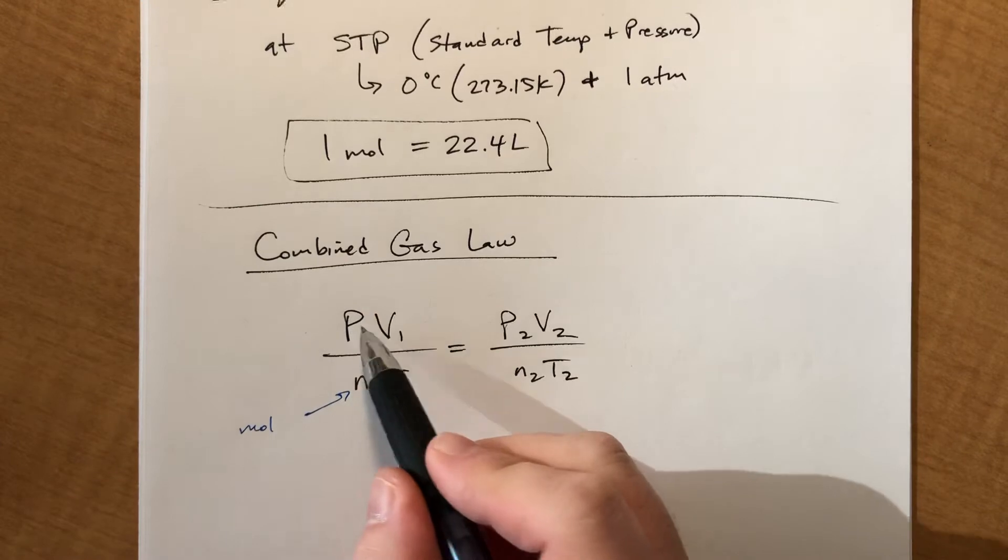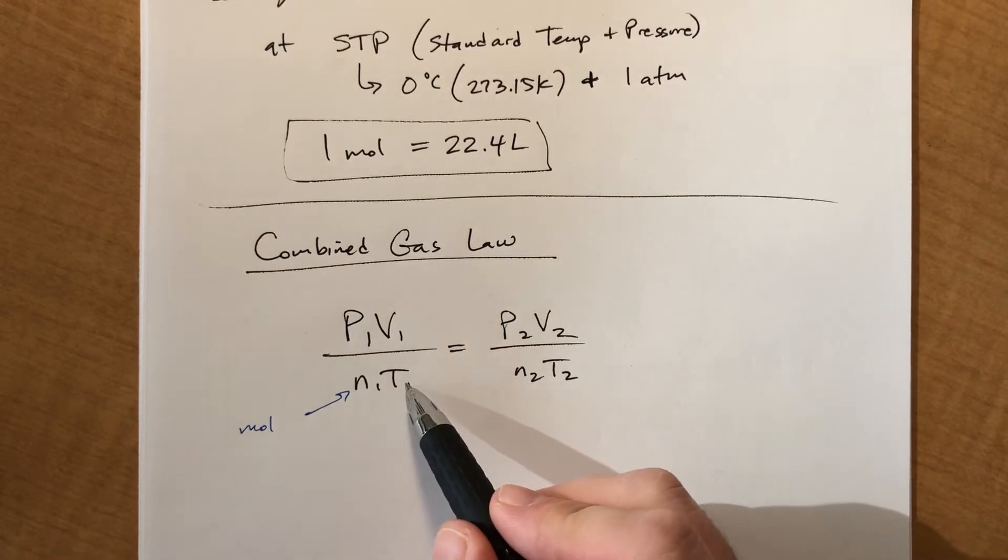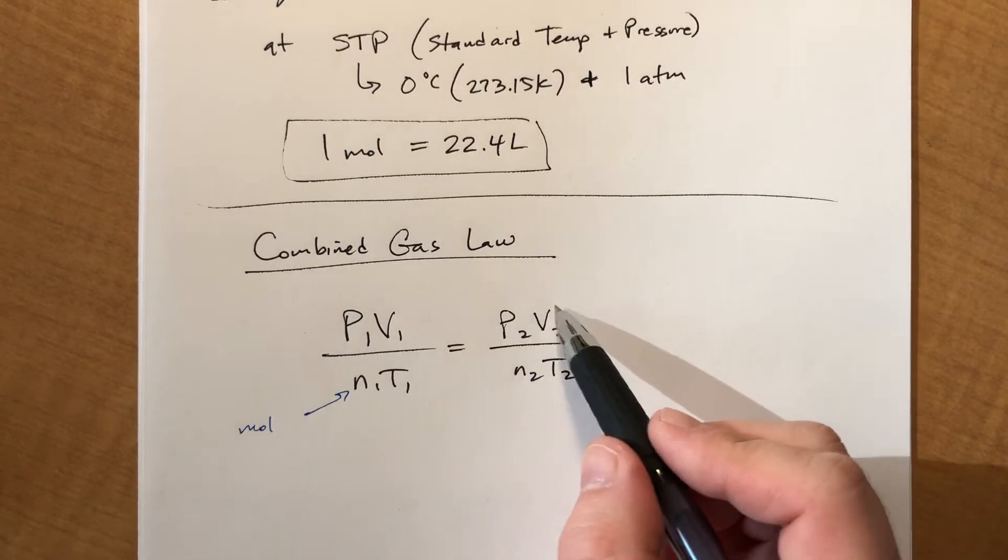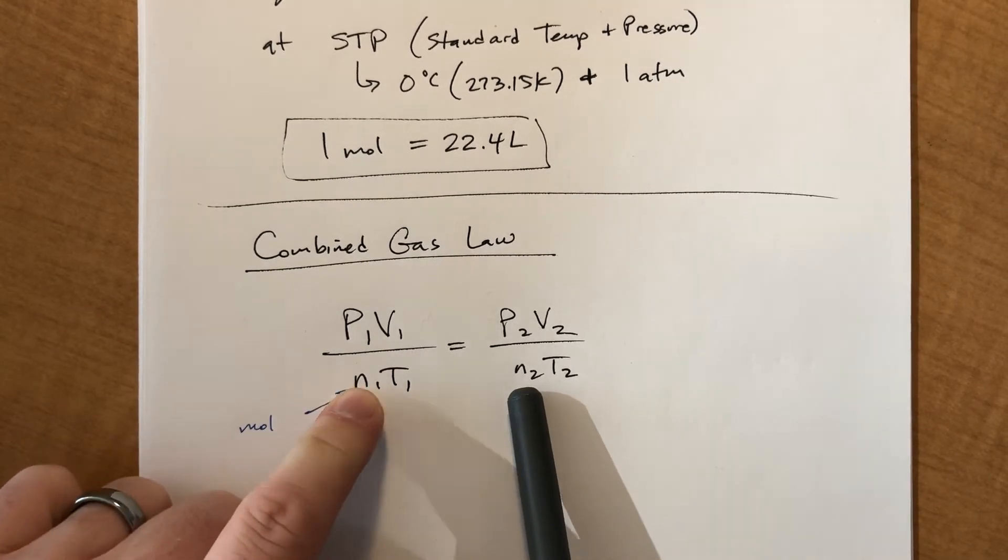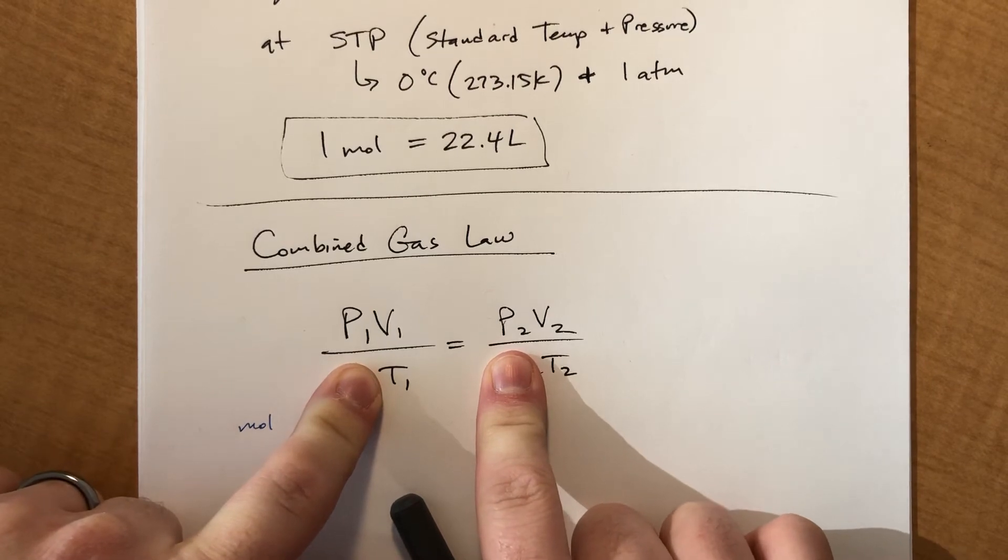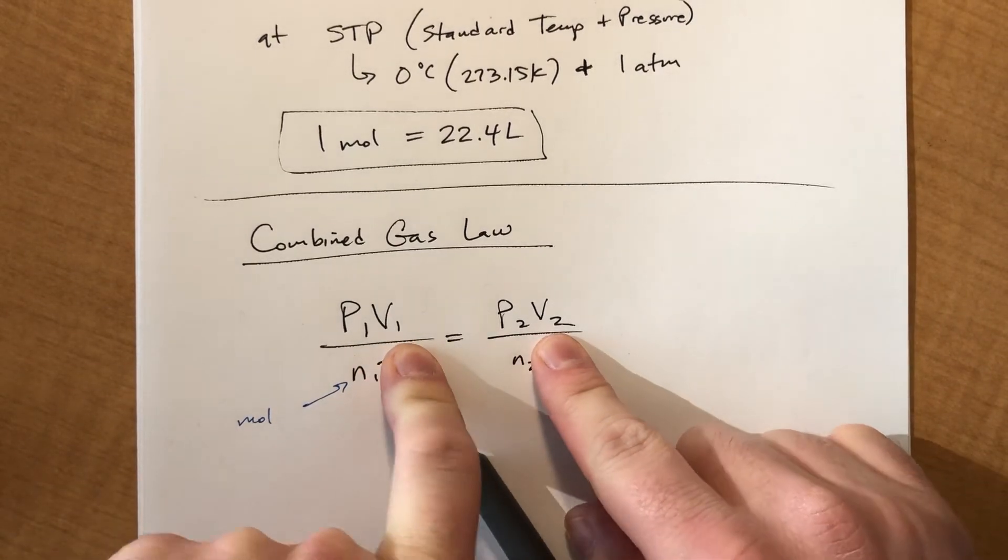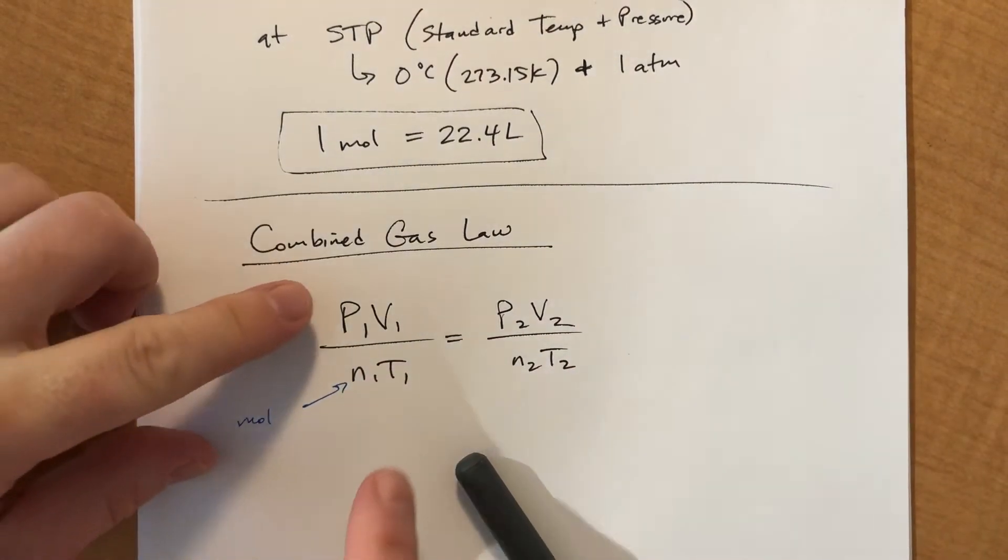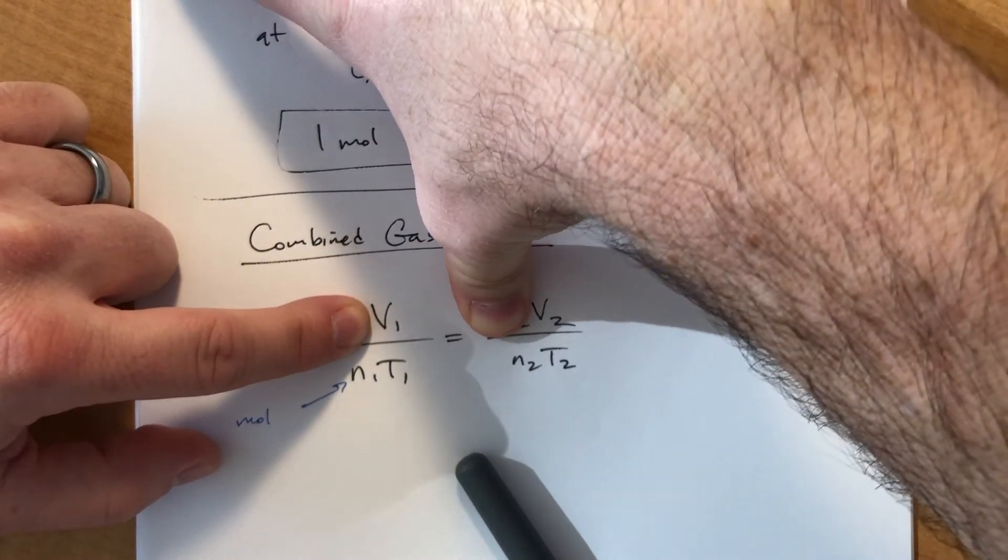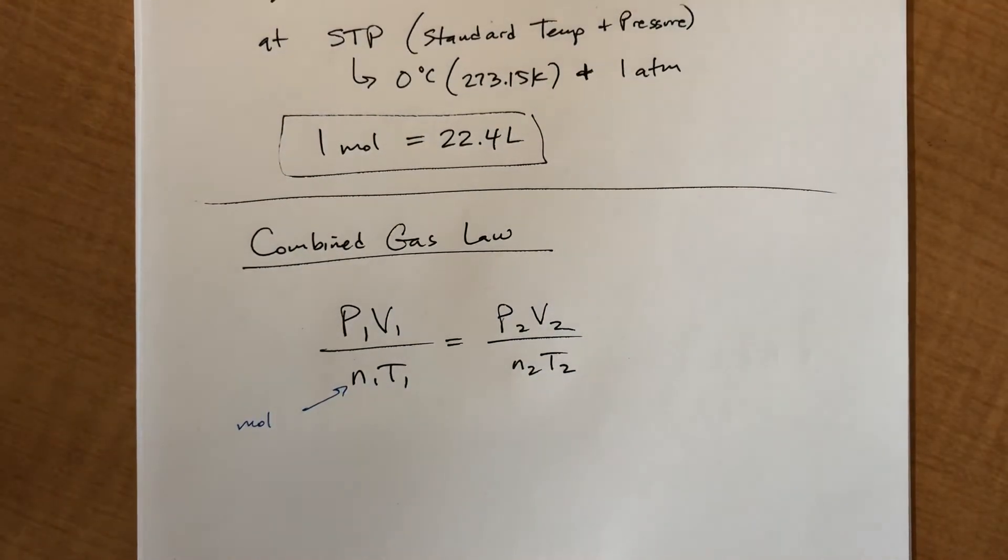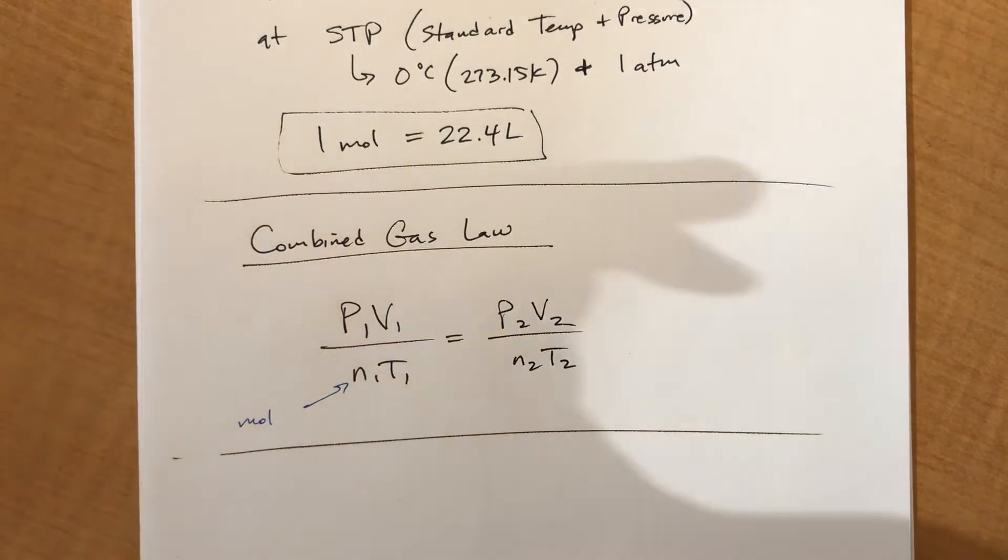So these are the initial conditions. Pressure, volume, moles, temperature. Temperatures need to be in Kelvin. This is the final conditions. Now what I will tell you is that if one of these things doesn't change, it'll just cancel out. So let's say the number of moles is the constant, is the same throughout. You can literally just not put it in the equation. If your temperature doesn't change, you can just remove that. If the pressure is constant somehow, you can literally just remove P1 and P2. So let's just try an example just to make sure that you have one in your notes.